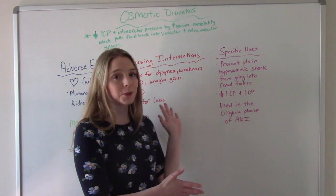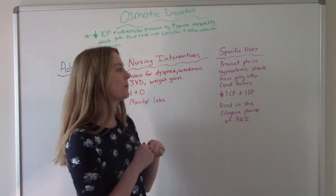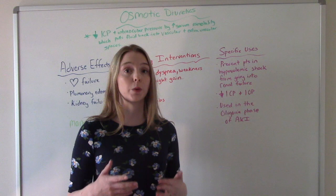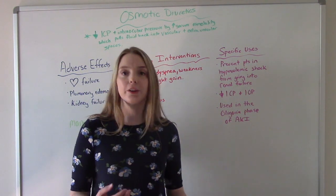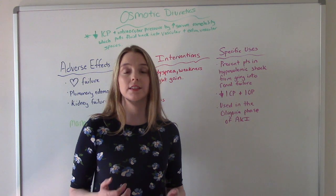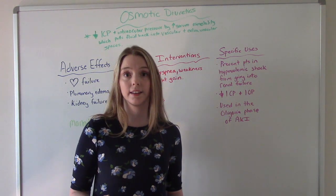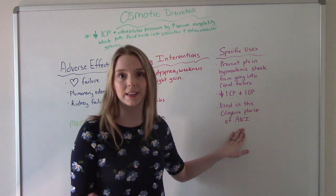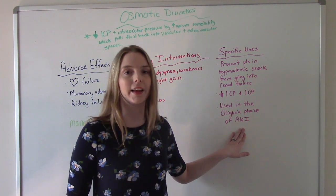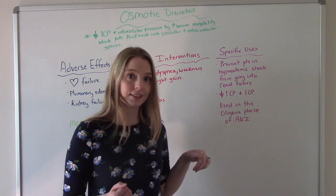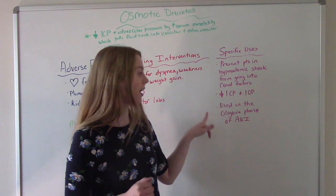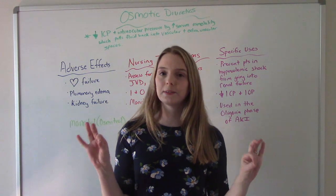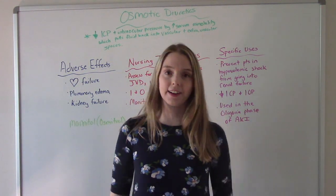Mannitol has specific uses: it can be used in hypovolemic shock to help prevent renal failure; it can decrease increased intracranial or intraocular pressure; and it is given during the oliguric phase of acute kidney injury. It's a little bit special and different — not one of the big three, but still an important diuretic.